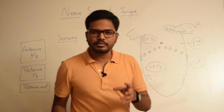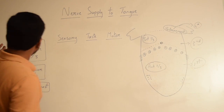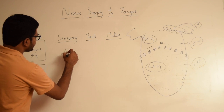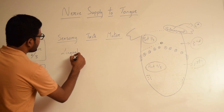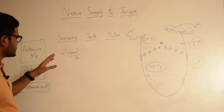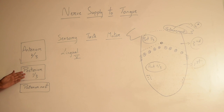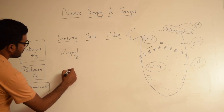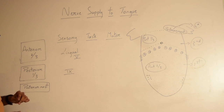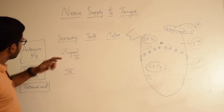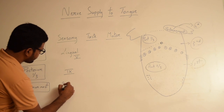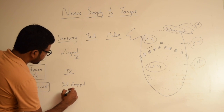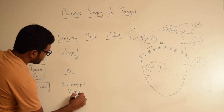Now let's look into the nerve innervation of the tongue. For the anterior two-thirds of the tongue, sensory supply is by the lingual nerve, which is a branch of the mandibular division of the trigeminal nerve. For the posterior one-third, the general sensation is carried out by the glossopharyngeal nerve, which is the ninth cranial nerve. And for the posterior most part of the tongue, the general sensation is carried out by the internal laryngeal branch of the vagus, which is the tenth cranial nerve.